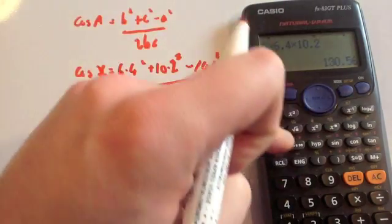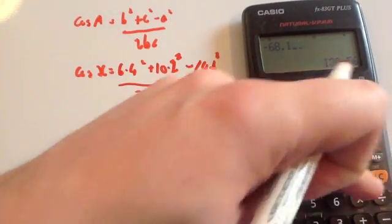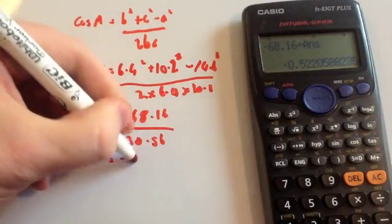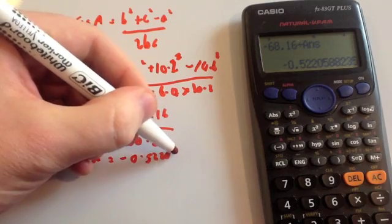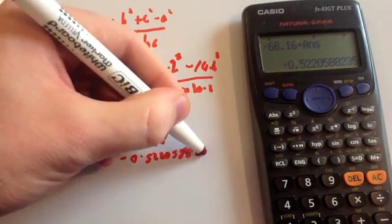Let's divide, that gives you the cos of x. Divide -68.16 by answer: -0.52280588235.